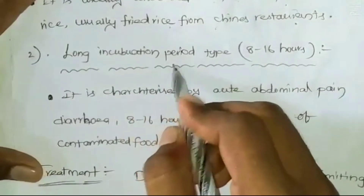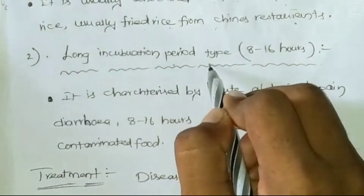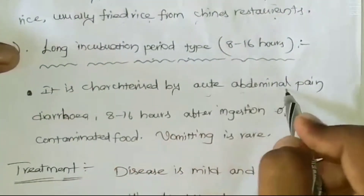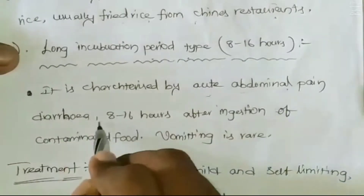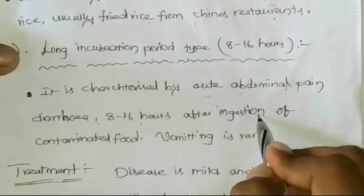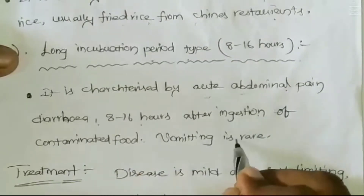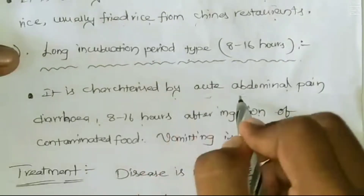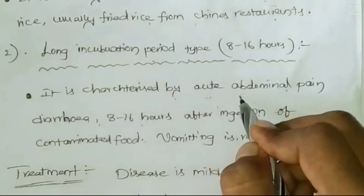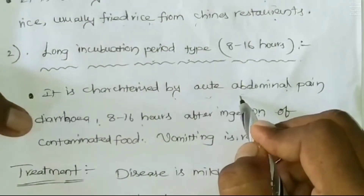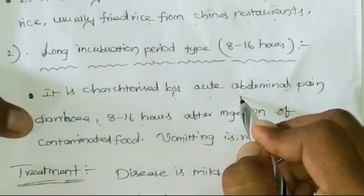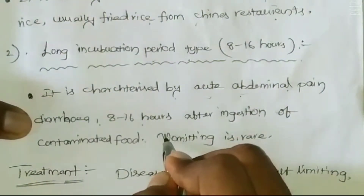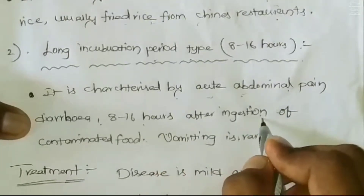The second type is the long incubation period type — it continues eight to sixteen hours. It is characterized by acute abdominal pain and diarrhea, occurring eight to sixteen hours after ingestion of contaminated food. Vomiting is rare. There is loose watery stool and the symptoms continue for eight to sixteen hours after ingestion.